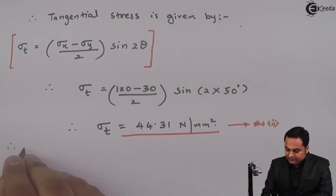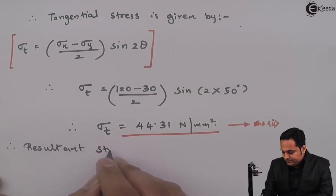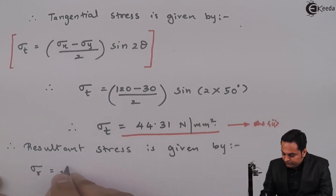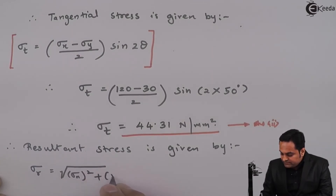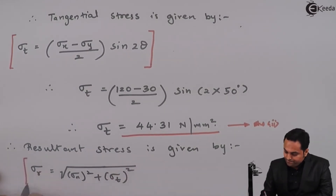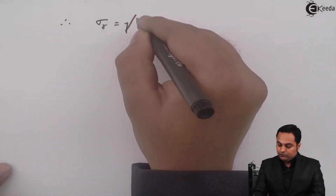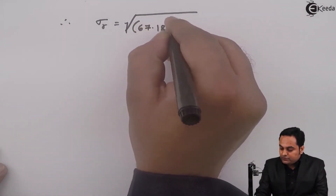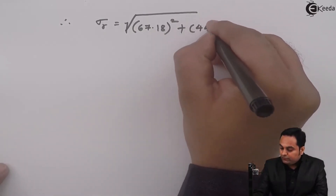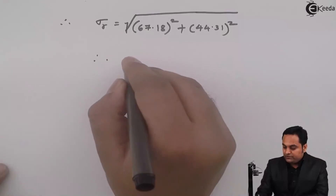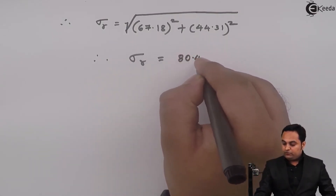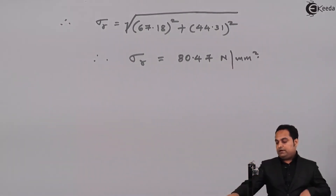After getting the tangential stress, we find the resultant stress. The formula is: Sigma R = √(Sigma N² + Sigma T²). Substituting: Sigma R = √(67.18² + 44.31²). The resultant stress comes out to be 80.47 N/mm². This is the third answer.